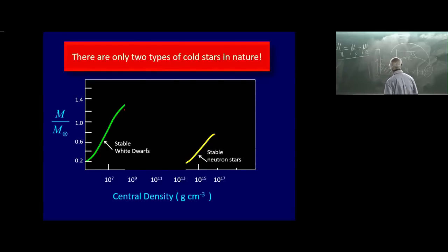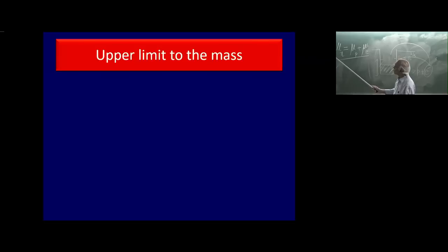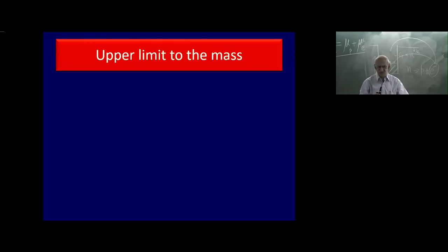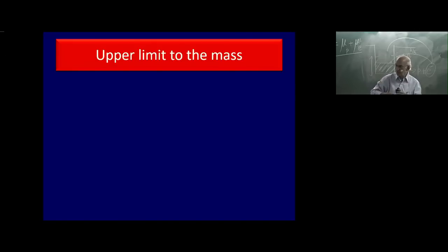That is the summary: there are only two classes of cold stars. Now let us go back to the question of maximum mass. What is the maximum possible mass? Can I say something like: you do what you like, but a neutron star can never be more massive than this? The answer is yes — just as Chandrasekhar did for white dwarfs. What is the stiffest equation of state — stiffest meaning stiff against compression — that will give you the maximum mass?